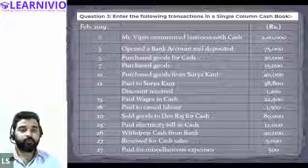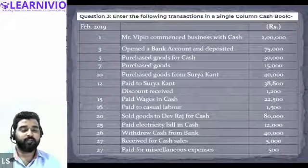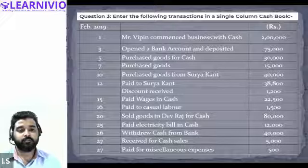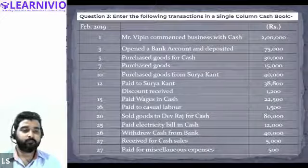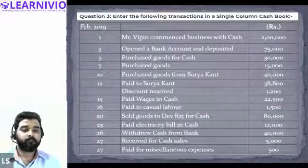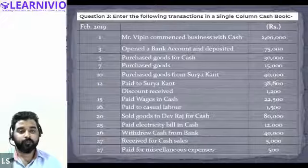Purchase goods for cash — Halima, on which side of the cash book will this be recorded? Credit side. And by what name? By Purchase Account. Whenever goods are purchased, we write 'By Purchase Account' only.